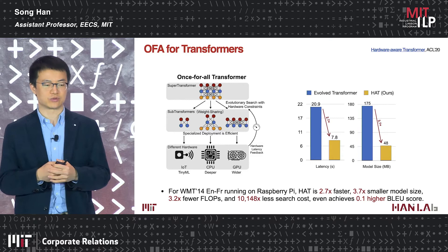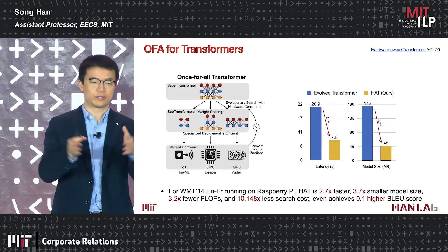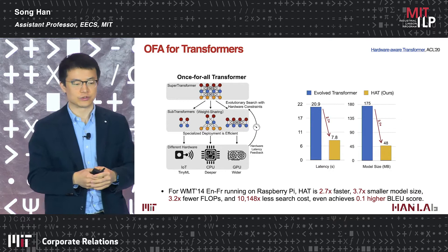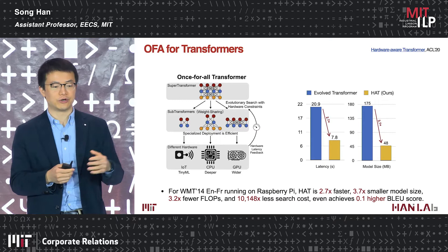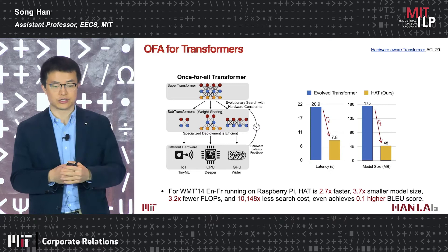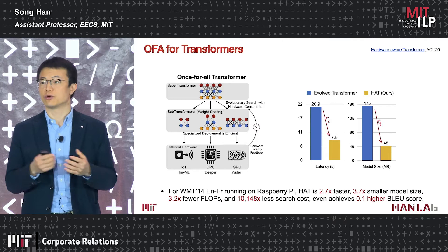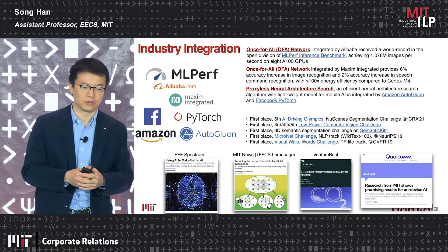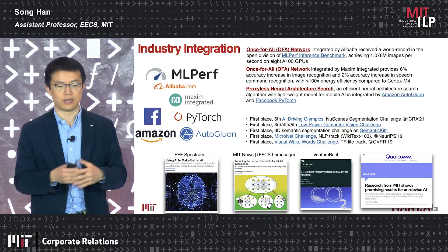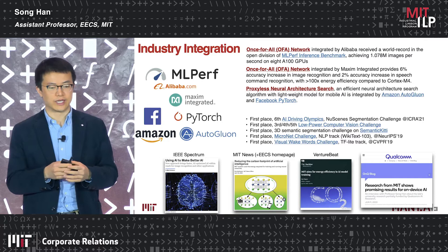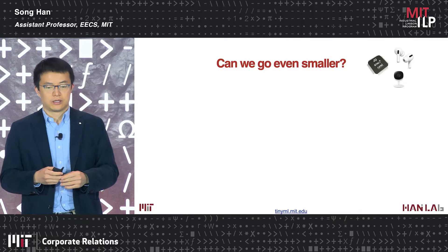The once-for-all technique also works well for natural language processing. We developed the once-for-all transformer, training a super-transformer and specializing different sub-transformers for different scenarios — for example, a smaller sub-transformer for a microcontroller or Raspberry Pi. On Raspberry Pi for machine translation, latency is reduced by 2.7x and model size by 3.7x. This technique has been widely adopted by industry including Amazon AutoGluon, Facebook, PyTorch, Intel, NVIDIA, and Qualcomm, and has won multiple low-power computer vision challenges for the past three years.